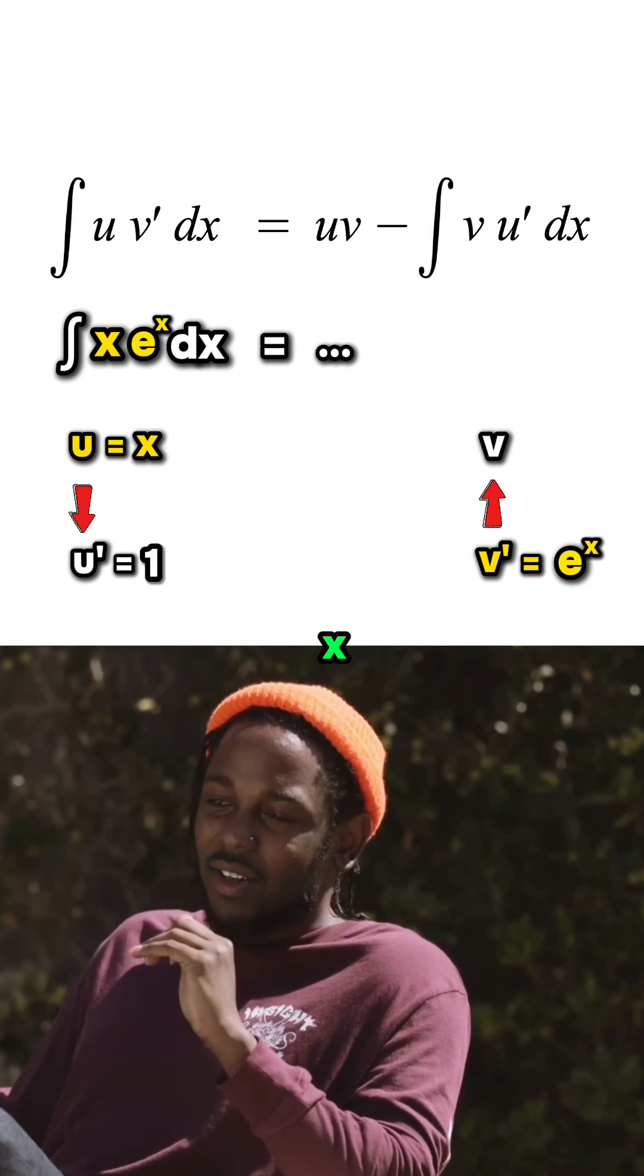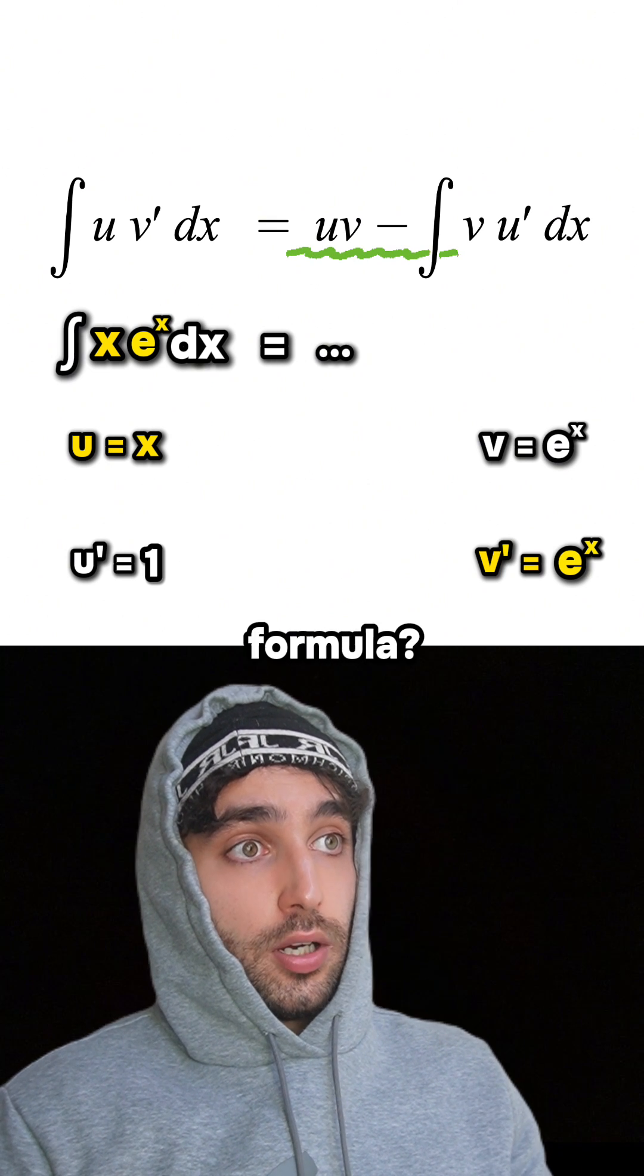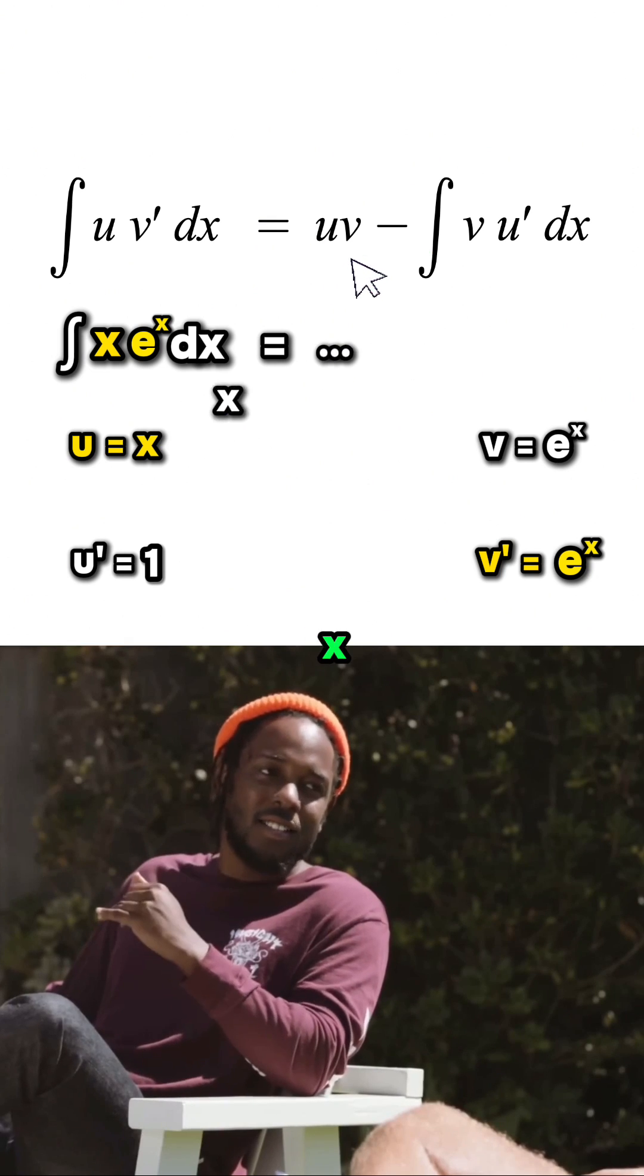So now we've got these four, we can just use them to copy the formula. So u times v will be x times e to the x, and then we take away the integral of e to the x times one.